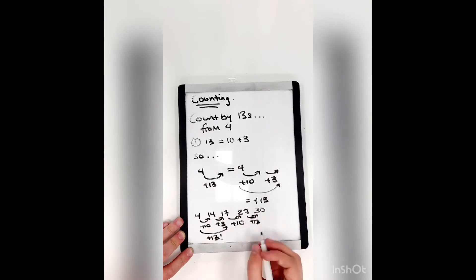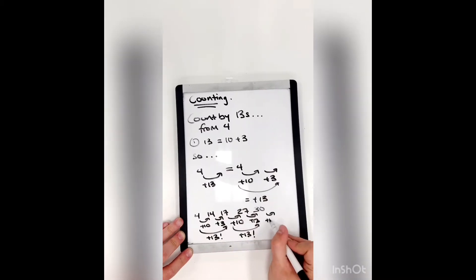Seventeen plus ten is twenty-seven. Plus three is thirty. That's plus thirteen, too. Plus ten again is forty. Plus three is forty-three. And that's plus thirteen.